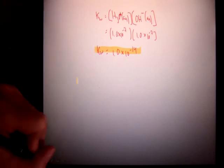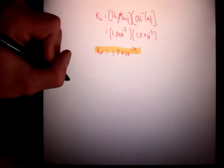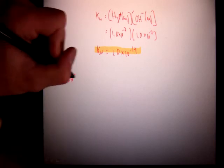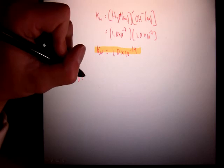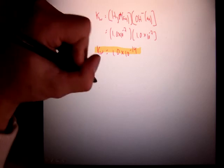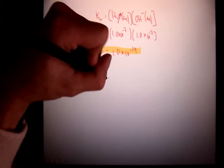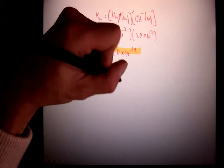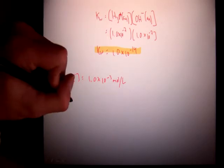So let's say as an example, I knew that the hydroxide concentration of a basic solution was 1.0 times 10 to the negative 3 moles per liter. The question is, what's the hydronium concentration?